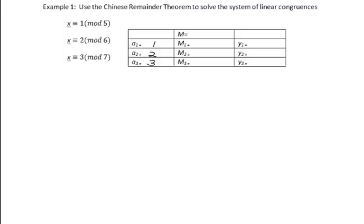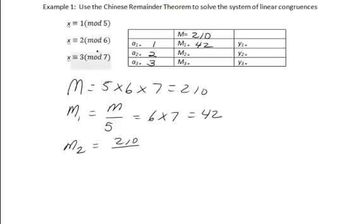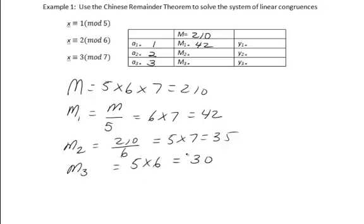Next, we find m, which is the product of the mods: 5 times 6 times 7, which is 210. Then m1 is m divided by n1, or 6 times 7, which gives 42. Similarly, m2 is 210 divided by 6, which is 5 times 7, or 35. And m3 is 5 times 6, or 30. We fill those values into the table.